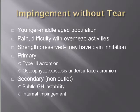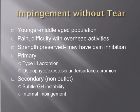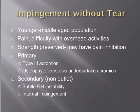It can also be secondary or non-outlet impingement, more commonly seen in a younger age group, often throwing athletes, who can develop subtle glenohumeral instability or an internal impingement phenomenon. In baseball players, attenuation of anterior structures and posterior capsular contractures lead to the so-called glenohumeral internal rotation deficit, predisposing them to impingement of the rotator cuff over the posterior labrum. These patients often have posterior labrum tears in addition to symptoms.